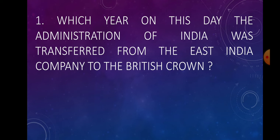Now let's start today's session of our questionaries. Question number one: on this day, in which year was the administration of India transferred from the East India Company to the British Crown? Answer: 1858. The administration of India was transferred to the British Crown by the passing of the Government of India Act 1858 in the British Parliament.